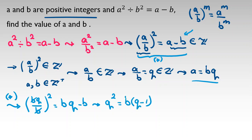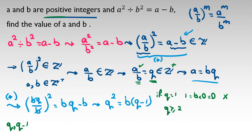Now we use an important rule: q and q minus 1 don't have any common factor. Since a and b are positive integers, q is a positive integer of at least 1. And q cannot equal 1 because that would make the right-hand side b times zero, which is zero — a contradiction. So q is at least 2. When q is at least 2, q and q minus 1 share no common factor greater than 1.